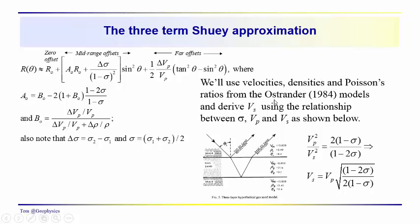We're using the same velocities, densities, and Poisson's ratios that Ostrander uses in his model. We also need to incorporate v sub s in order to get Poisson's ratio. V sub s is calculated from v sub p very easily using the relationship between the ratio of v sub p squared and v sub s squared with Poisson's ratio.